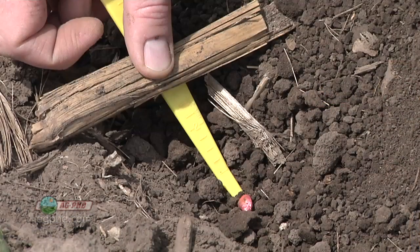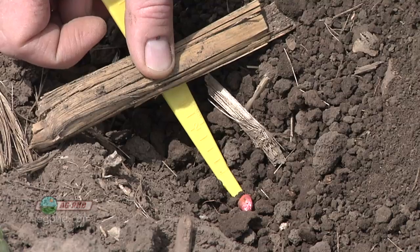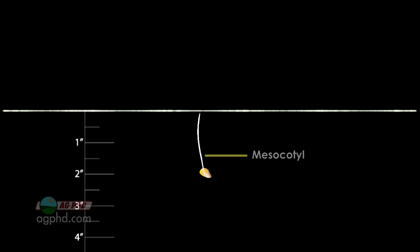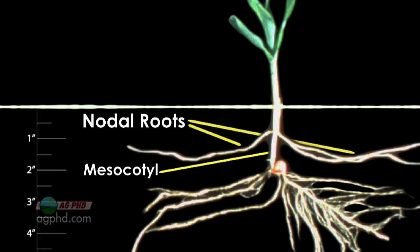If you plant the corn a little deeper — say two and a half inches deep — that's fine. You're just going to find a longer mesocotyl. The nodal roots are still going to be within three quarters of an inch of the soil surface, so that doesn't really change. It's just the mesocotyl length that will change.